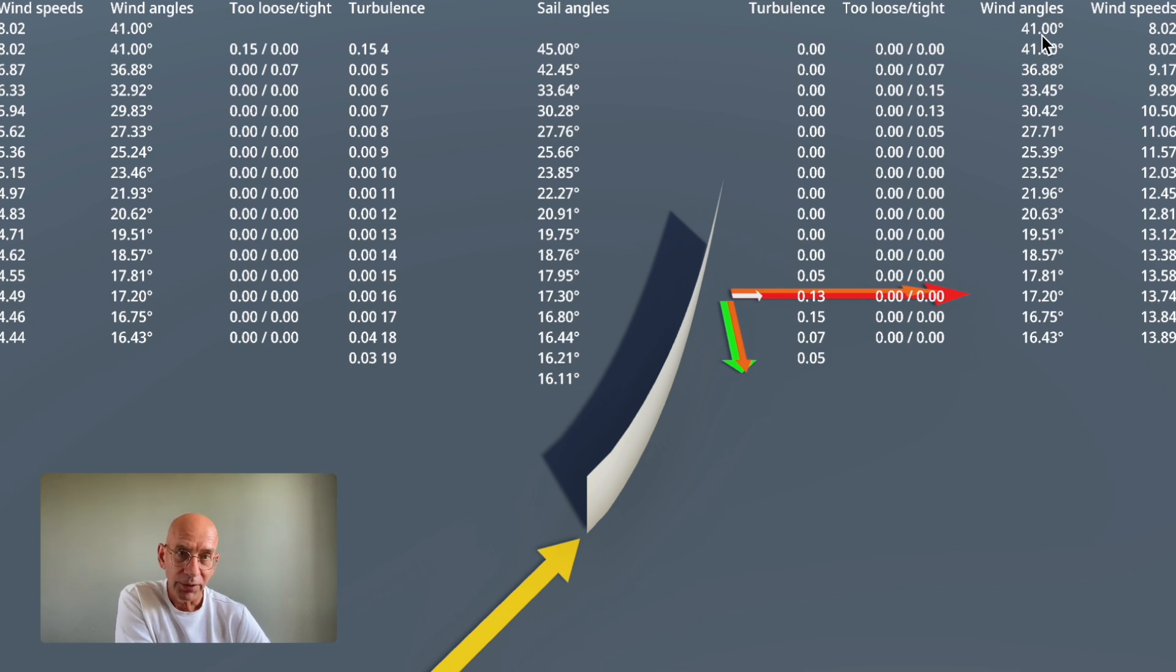On the other side, same thing - the wind flows along the sail and here you see what happens to the angles. In the column next to it, you see what happens to the wind speed. It's 8 meters per second and then it increases up to almost 14 meters per second, and here the speed decreases to 4.44 meters per second, and that results in a force. You can see it here - the red arrow is the force sideways, green arrow is the force forward.